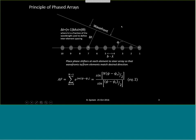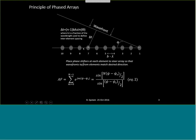In a receive array, we have a wavefront impinging on this one-dimensional array at a given angle. As a result, each element sees the signal coming in at a slightly different time, and hence there's a delay of one element relative to the other. We incorporate phase shifters at each element to constructively add all the signals and form a beam. In transmission, it's the inverse — we set the phases to steer the wavefront at a given angle.